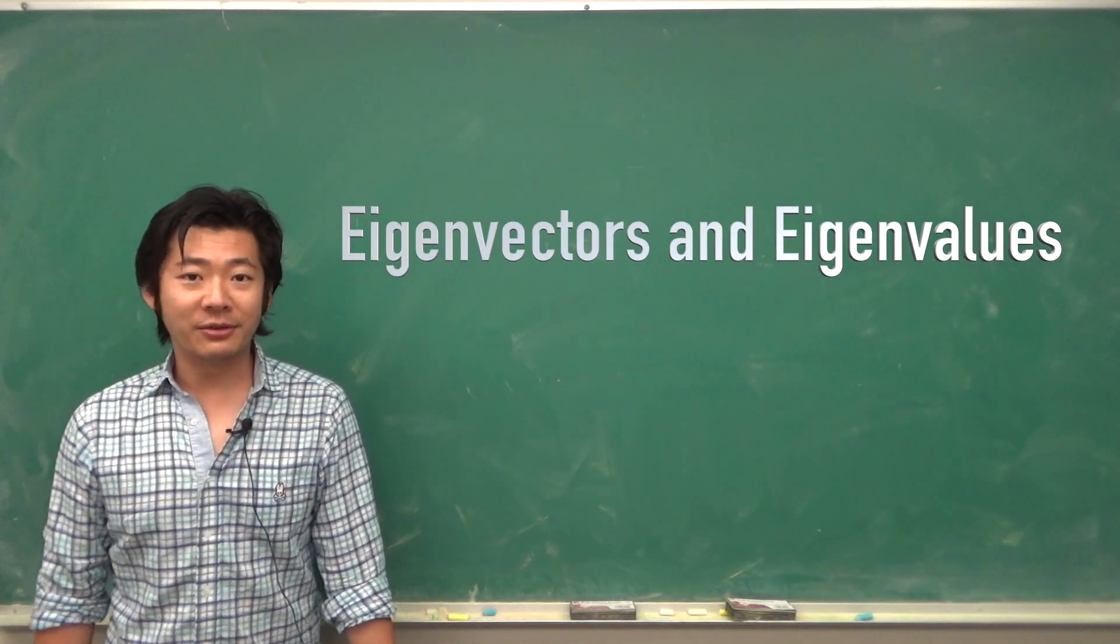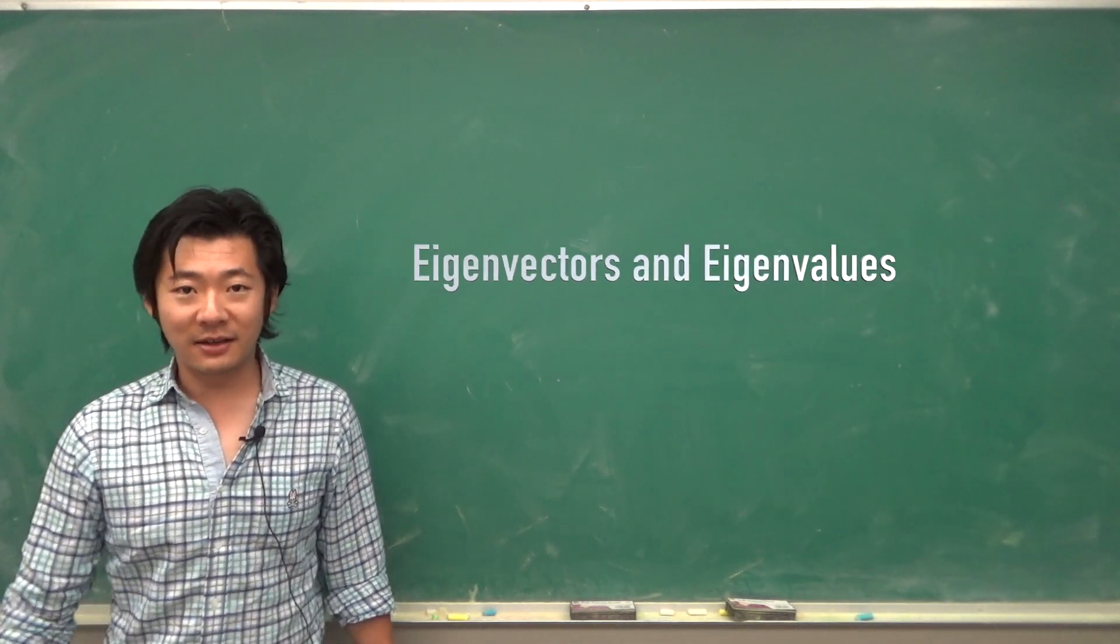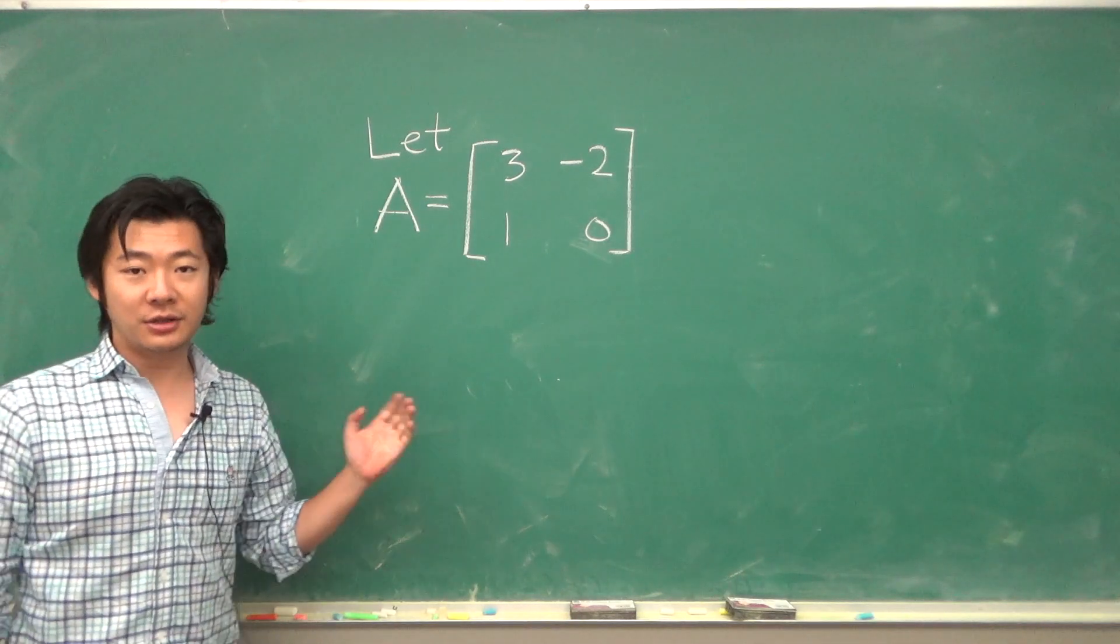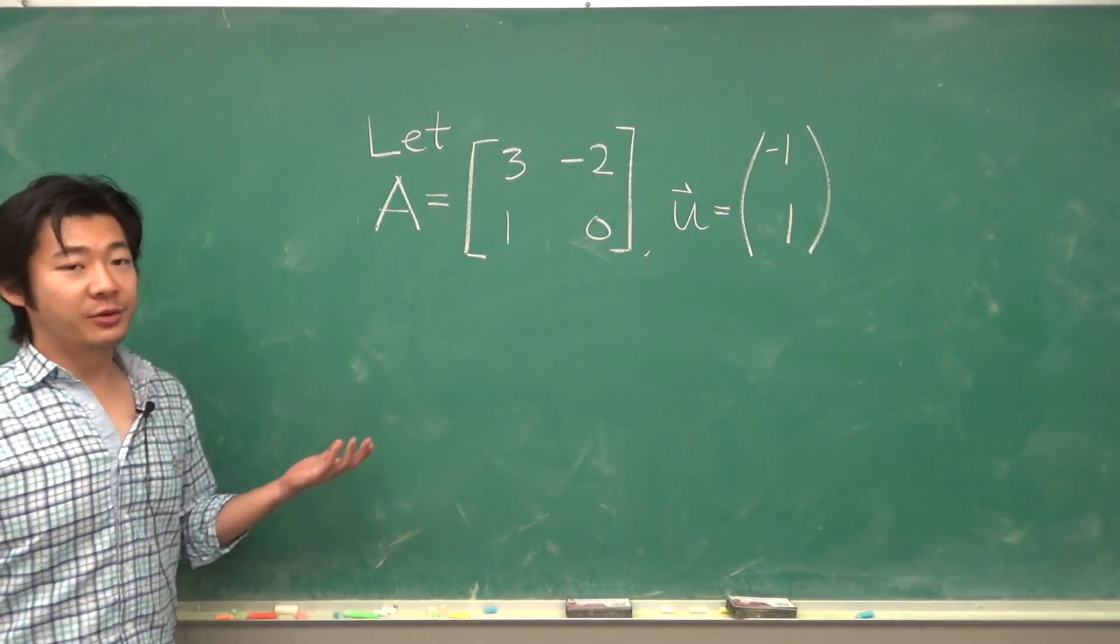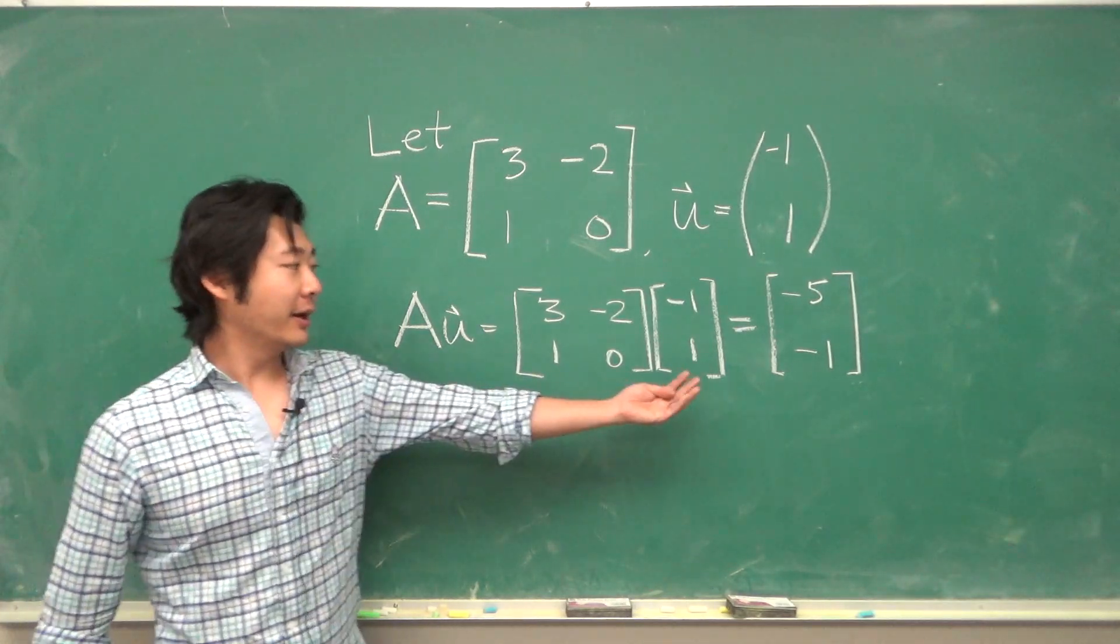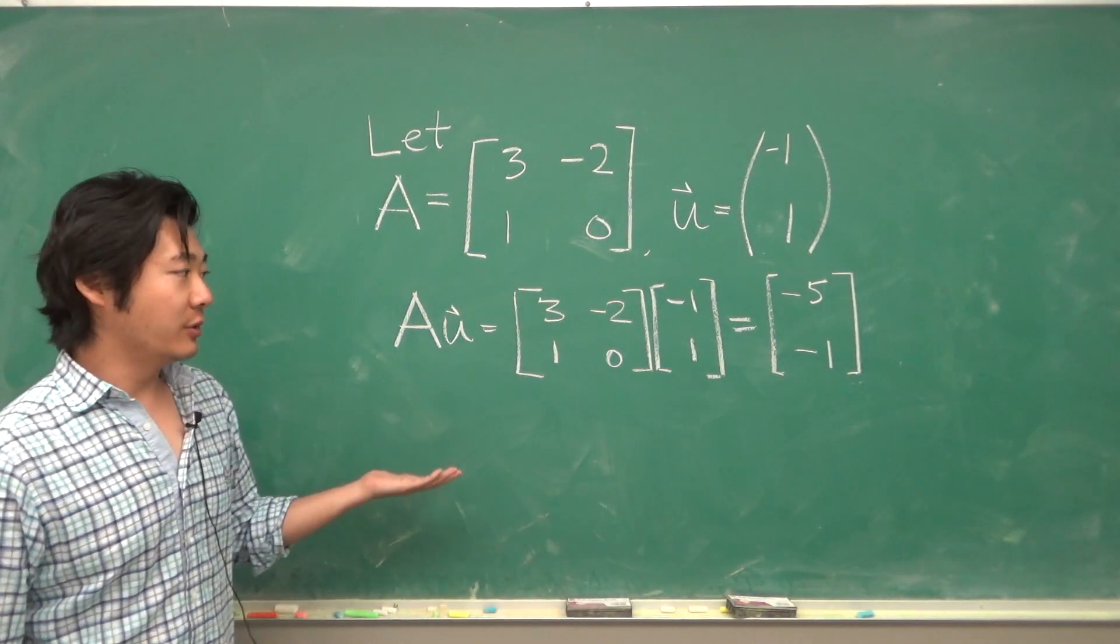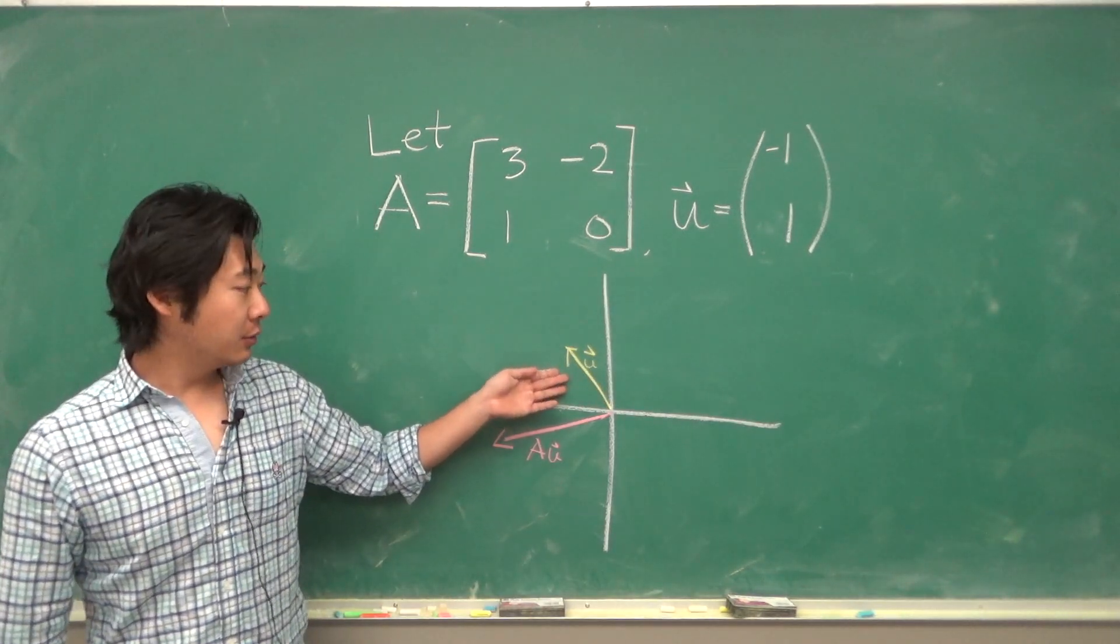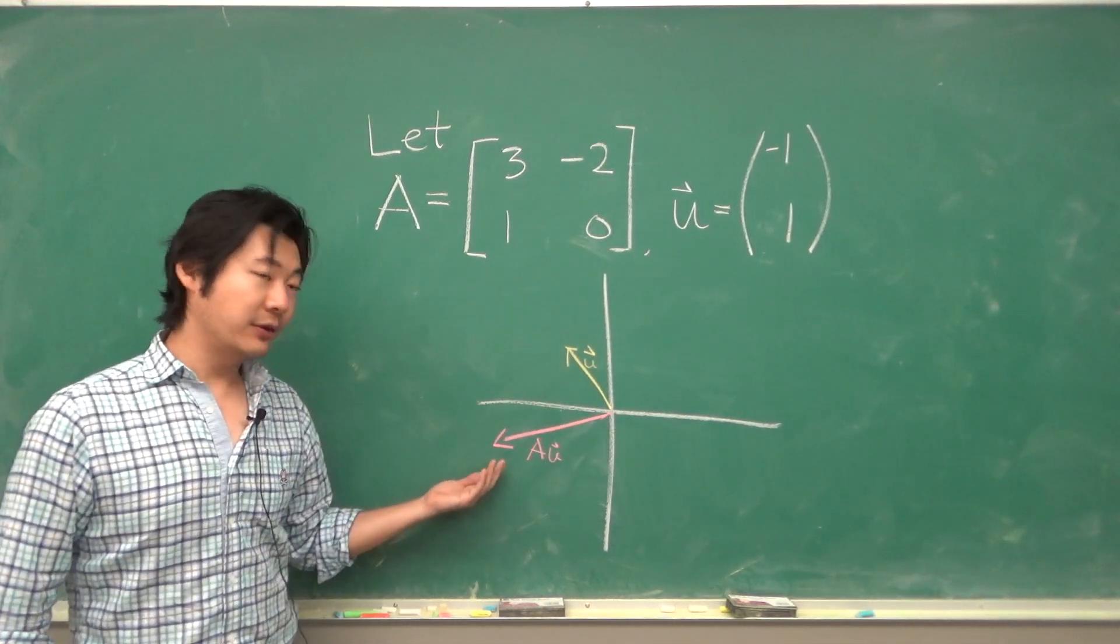Hello everyone, in this video I will talk about eigenvectors and eigenvalues. Consider this 2 by 2 matrix A. If we multiply A by this vector U, then we will get a vector negative 5, negative 1. So geometrically, this vector U gets mapped to this vector over here.